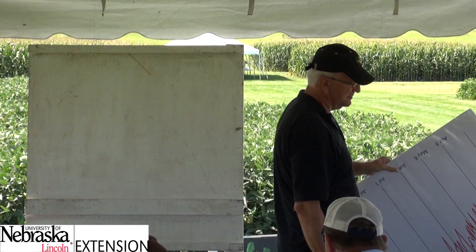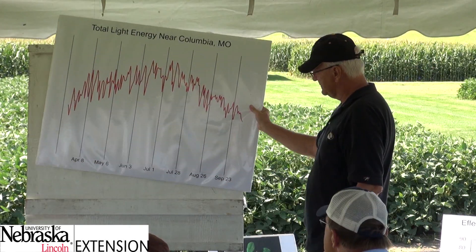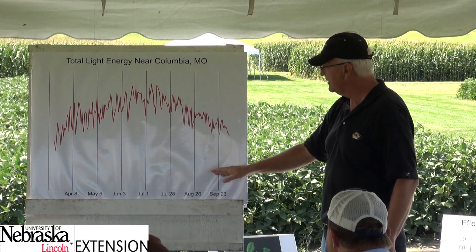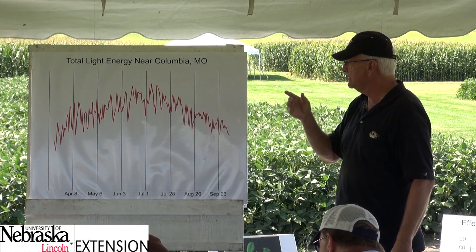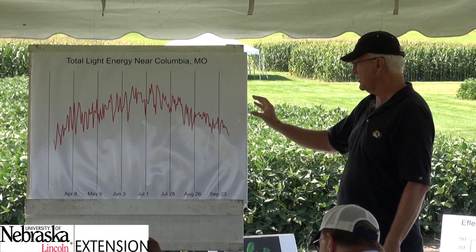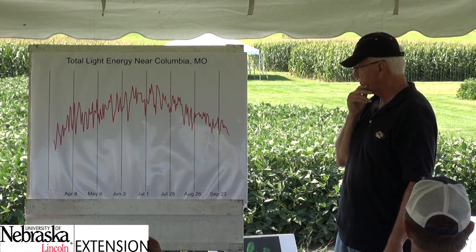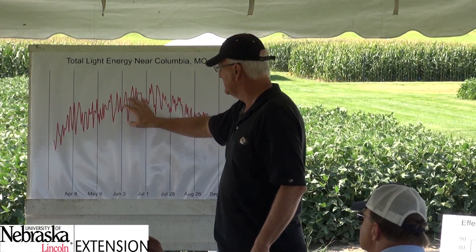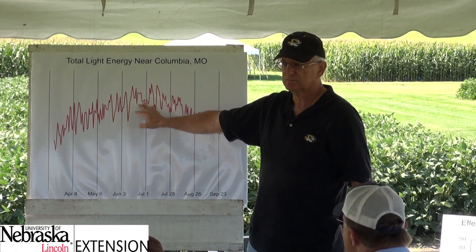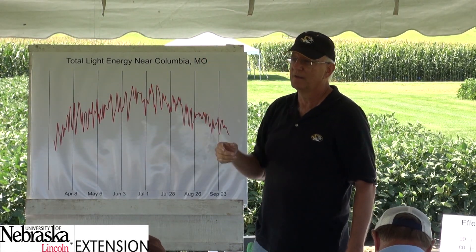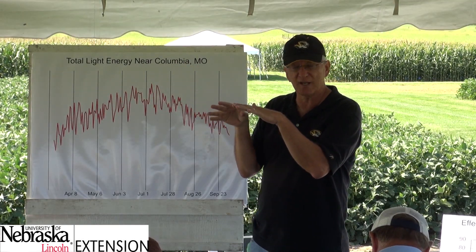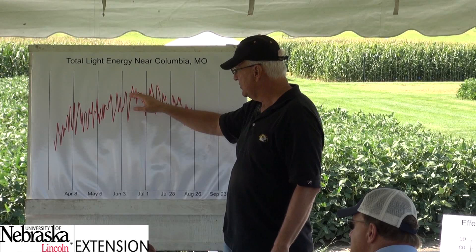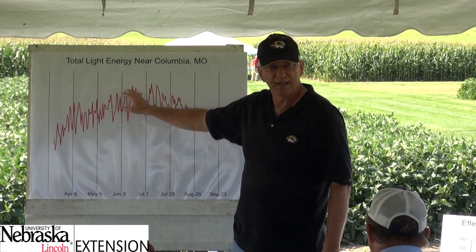Let's talk a little about planting date. It comes back to this light thing — it's important. This is the date of the year versus the actual amount of light energy in a field close to Columbia. It jumps up and down a bit, averaged across several years. There are two things happening as we go from spring to the first day of summer: photoperiod is longer, but also the angle of the sun changes. So the field actually sees more energy — if you looked at noon on June 20th versus noon on May 1st, there would be brighter light hitting that field on June 20th.